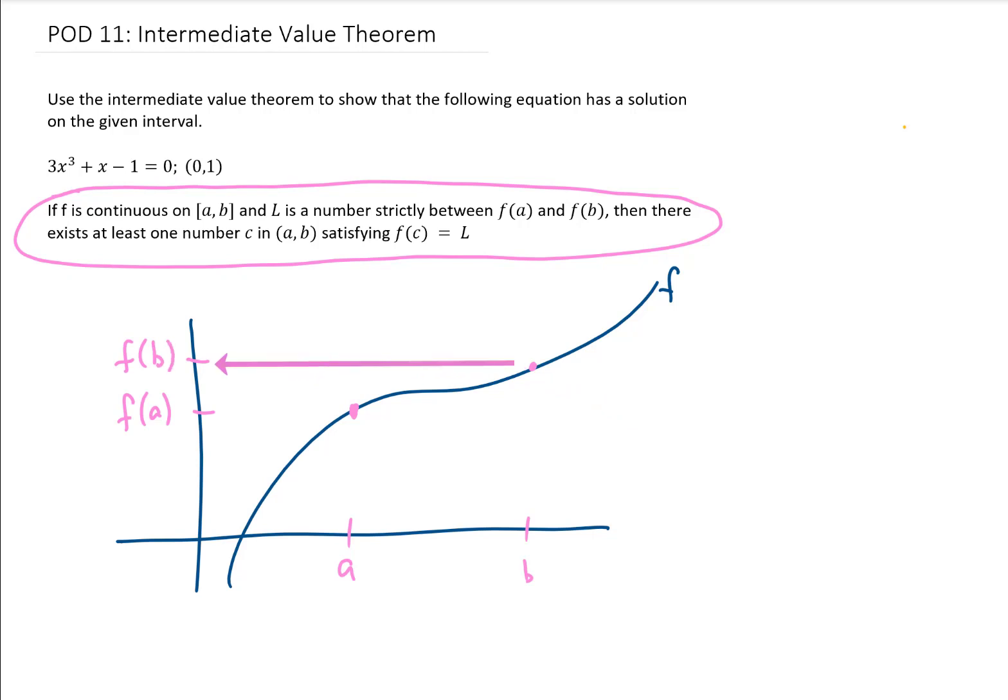We're going to pick some y value between f(a) and f(b), and we're going to call that L. All the intermediate value theorem says is that this function hits a y value of L somewhere in between x equals a and x equals b. We give that x value a name. We call it c.